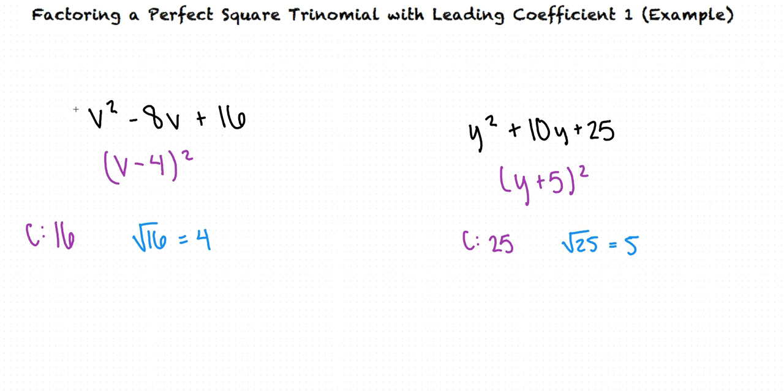In example 1, the b value was -8, so we have a -4 here. In example 2, the b value is positive 10, so we have a +5 here.